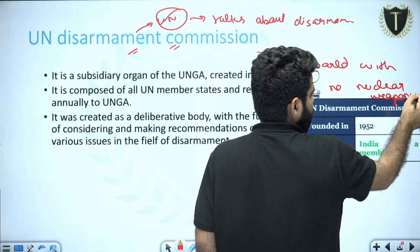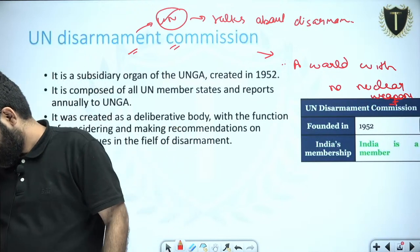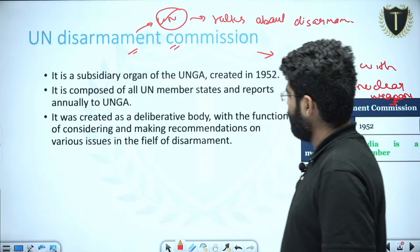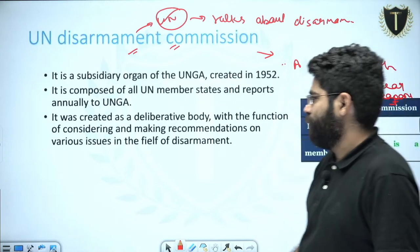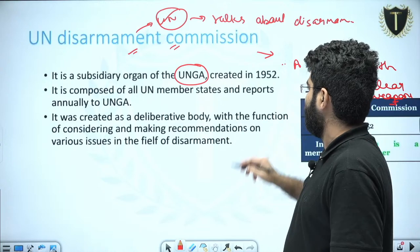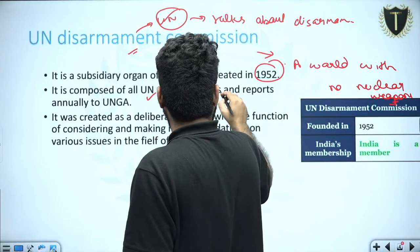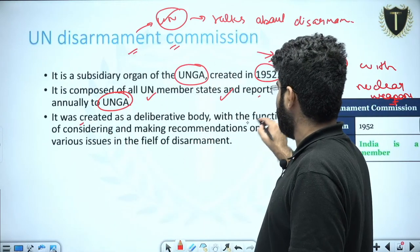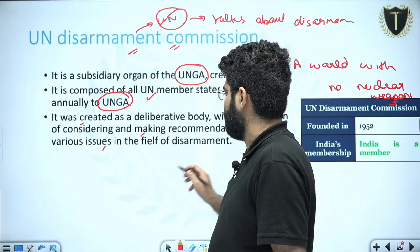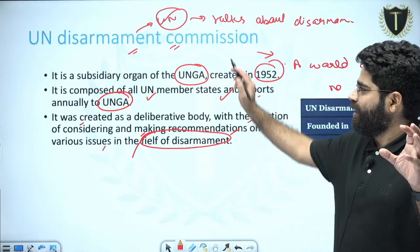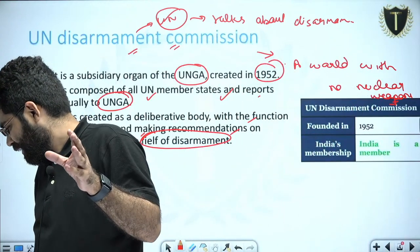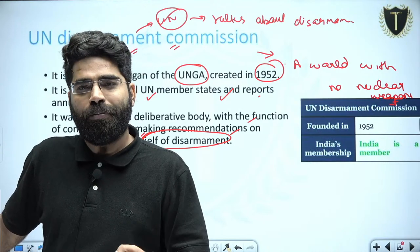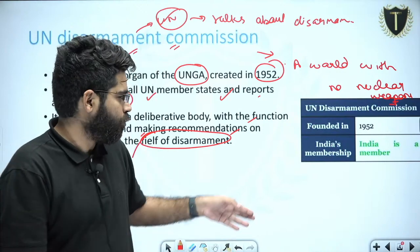COP — Conference of the Parties — is not a topic for today. We are studying only the three bodies: UN Disarmament Commission, Conference on Disarmament, and Nuclear Suppliers Group. It is a subsidiary organ of the United Nations General Assembly, created in 1952, composed of all UN member states, and it reports annually to the General Assembly. That means India is also a member of this commission.